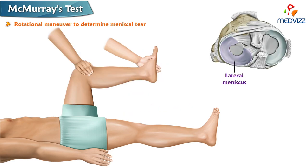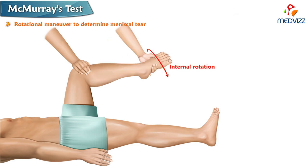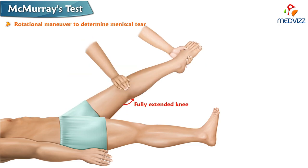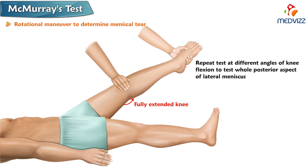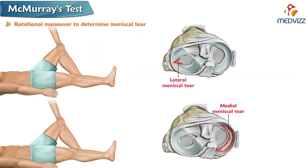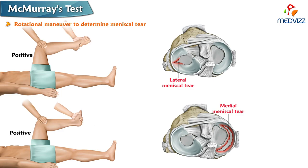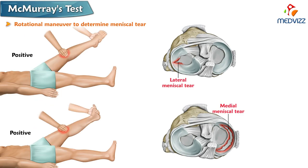The lateral meniscus is assessed with one hand over the joint while the leg is internally rotated, and then the knee is brought into full extension. The test is repeated several times at different angles of knee flexion in order to test the whole posterior aspect of the lateral meniscus. The test is considered positive if the patient experiences clunking, locking, or pain in the knee.